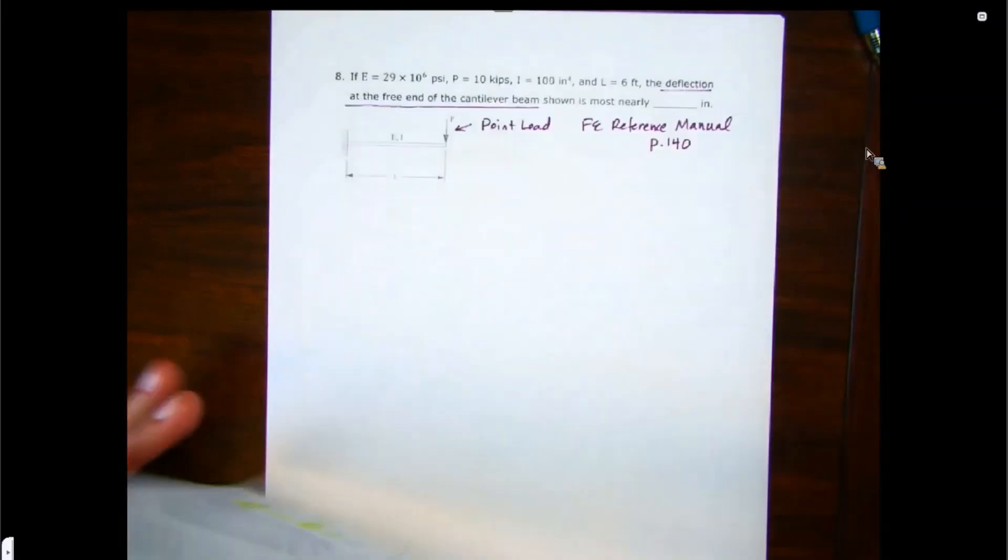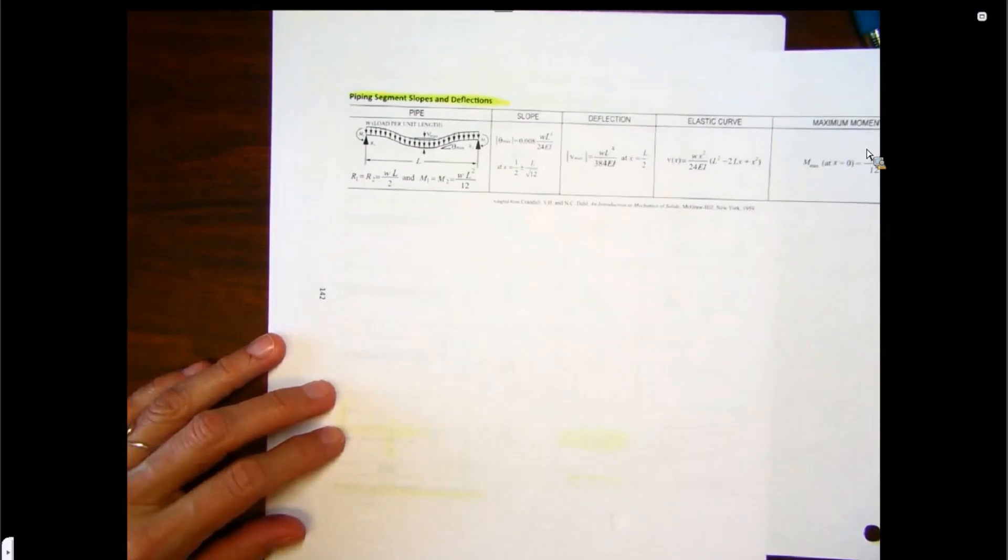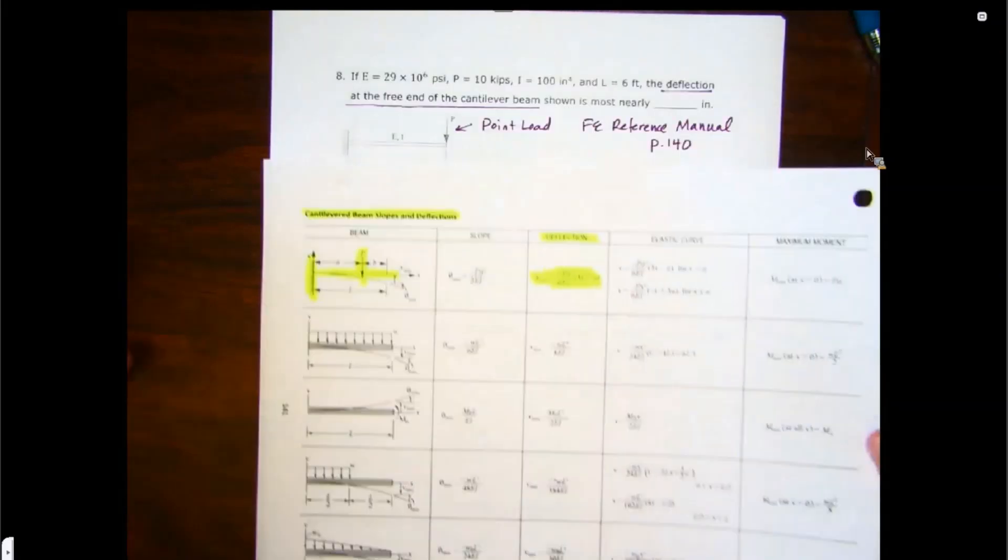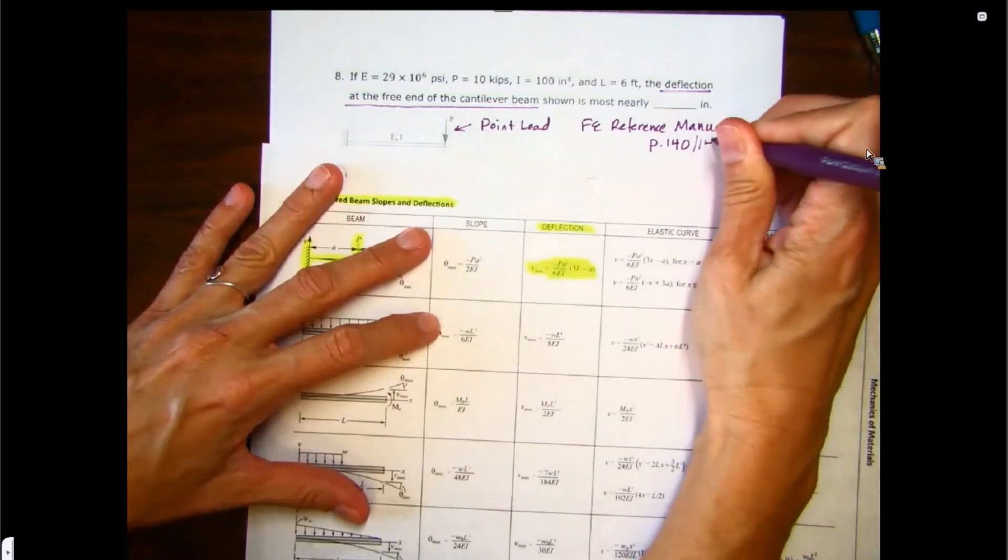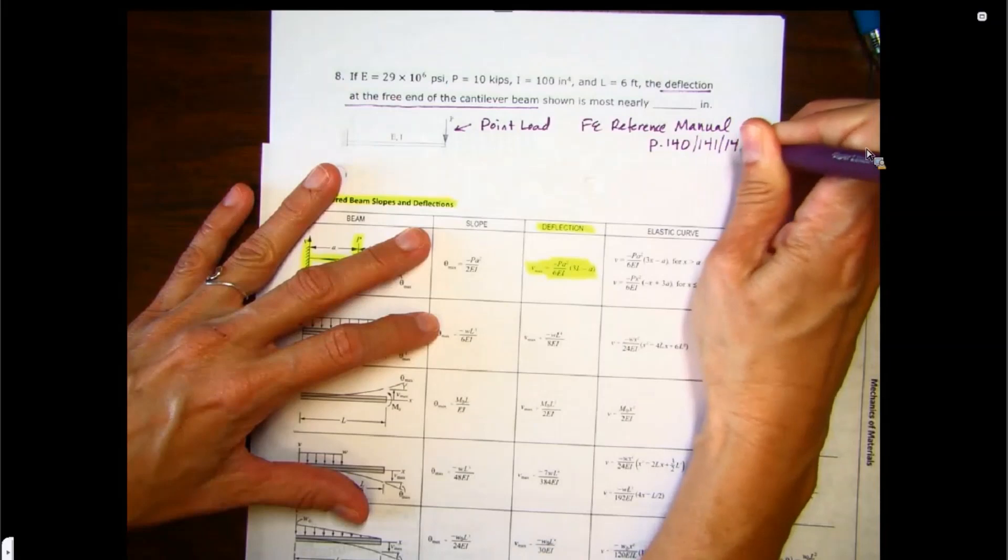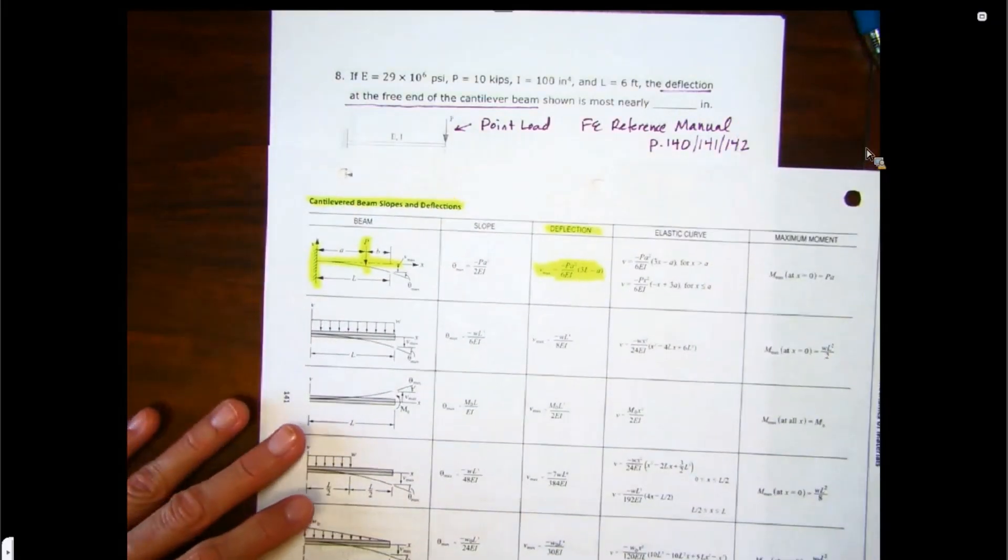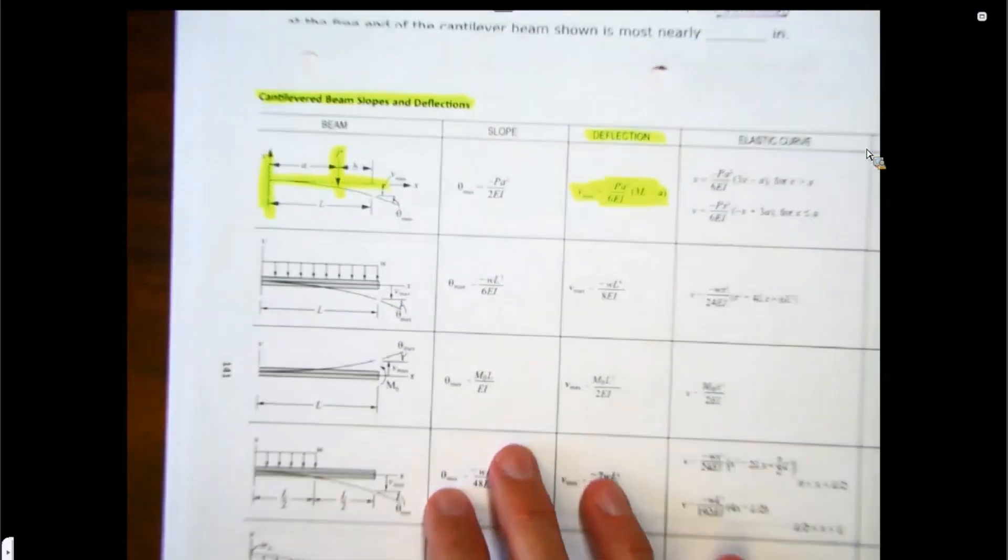But what we're interested in here are the cantilever beams. Also, just to show you on 142, there's piping segment slopes and deflections as well. So 140, 141, 142 is going to have this type of information. I would definitely look over those diagrams because they can be super helpful when you need to solve a problem. You don't have to derive a formula for this.